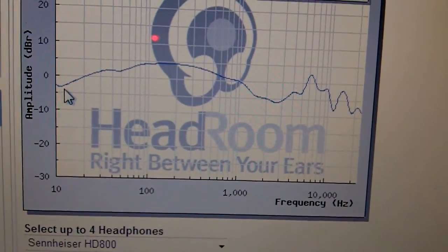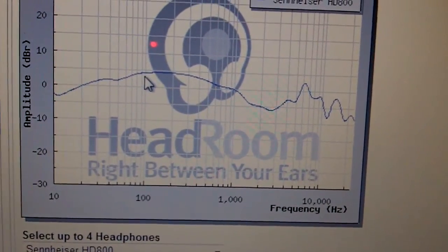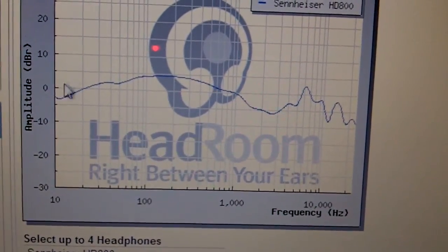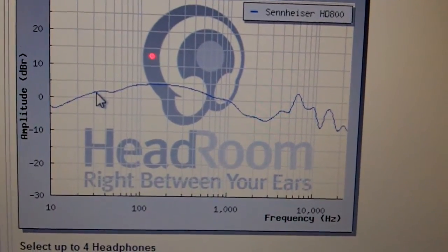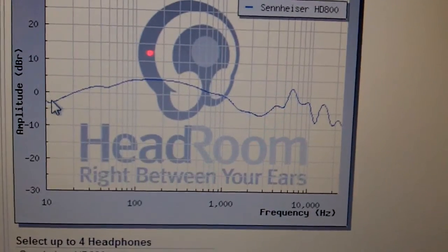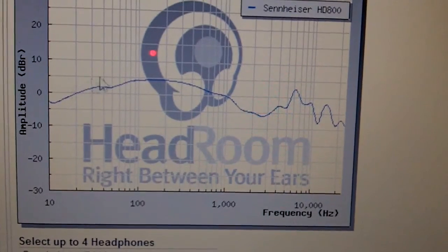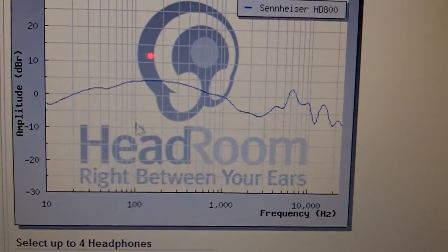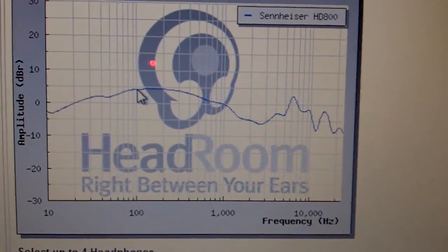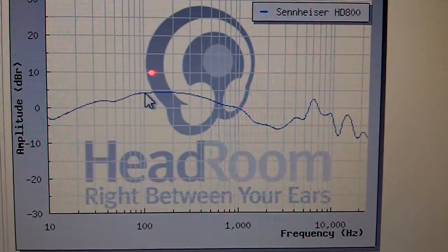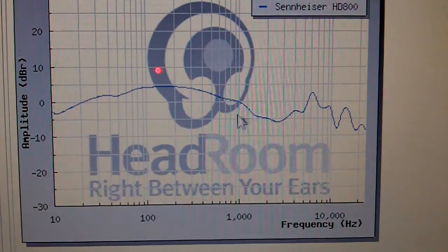As you can see in the sub bass area, it has less volume intensity than the mid bass area. So keep in mind, zero is your reference in the volume intensity. Anything above zero is louder. Anything below zero is, it reduces in volume. So 100 hertz, which is your mid bass, for example, is approximately 4 decibels louder than your mid range, which is basically 1000 hertz.